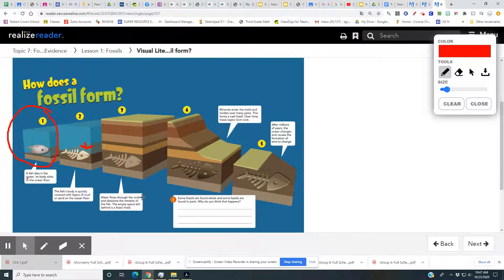Water flows through the rock and dissolves the remains of the fish. The empty space left behind is the fossil mold. Minerals enter the mold and harden over many years. This forms a cast fossil. Over time, these layers form rock.